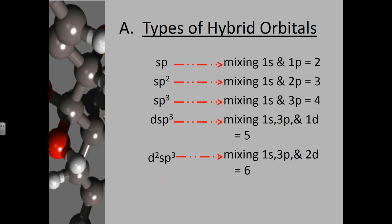The types of hybrid orbitals we'll encounter are SP (also SP1), which mixes one S and one P orbital. The S orbital has one orientation, P orbitals have three separate orientations, and D orbitals have five orientations. Each atomic orbital can hold up to two electrons per orbital.